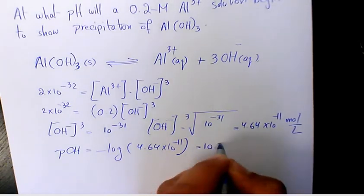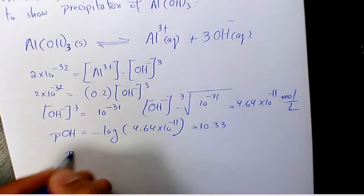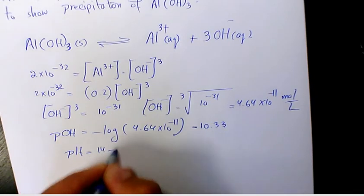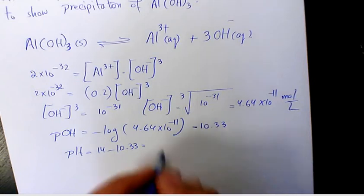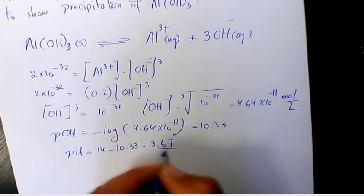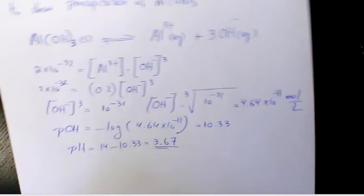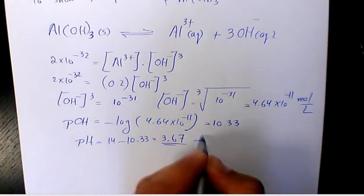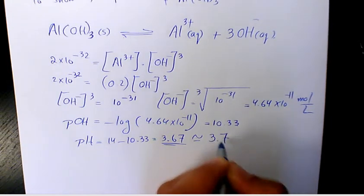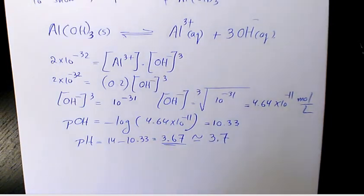So pH will be 14 - 10.33. 14 - 10.33 is gonna be 3.67. That's the pH for this solution. If you want, you can make it approximately equal to 3.7. At this pH, this corresponds to precipitation.